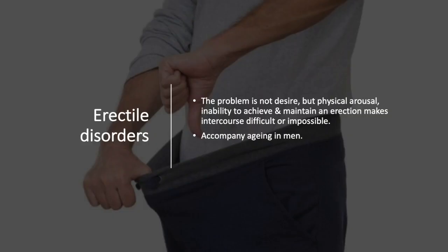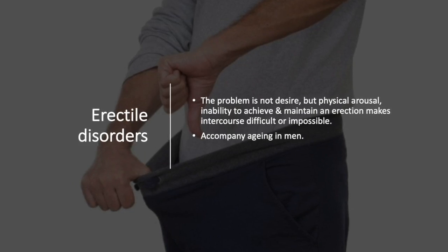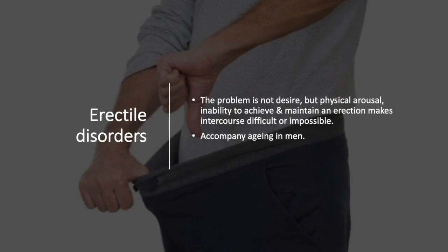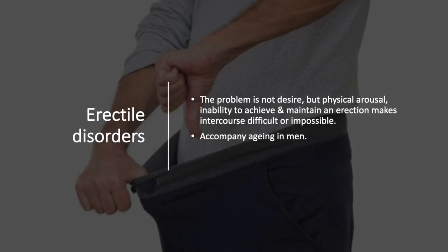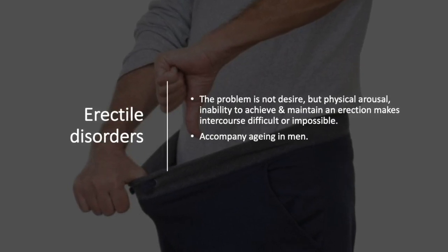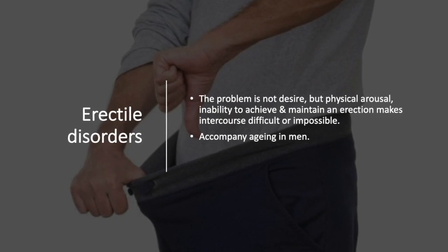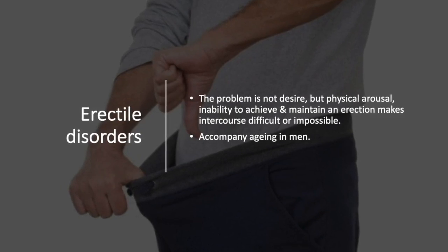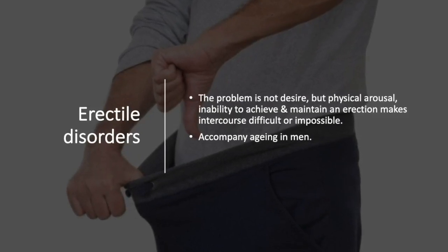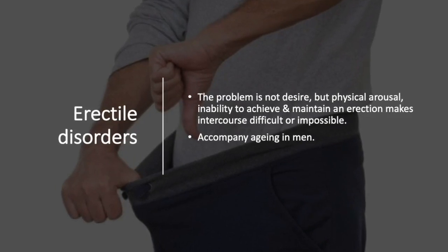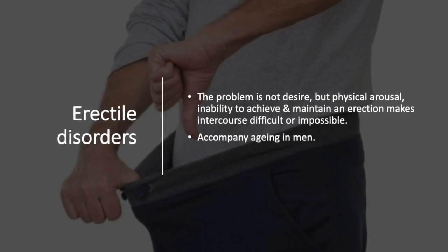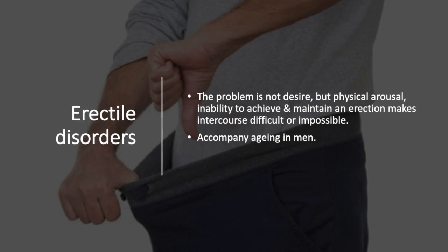There are also erectile disorders, which include premature ejaculation. Erectile disorders are when the problem is not desire — it's not in having the desire to have sex — but rather a physical arousal problem: an inability to achieve and maintain an erection, which makes intercourse difficult or nearly impossible. This is usually associated with aging in men.